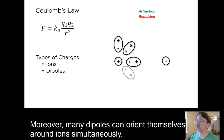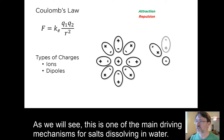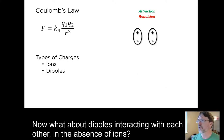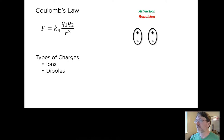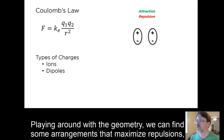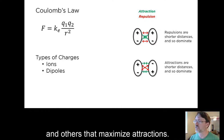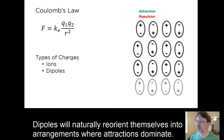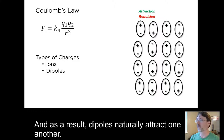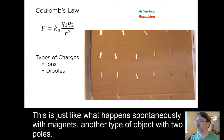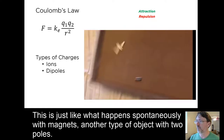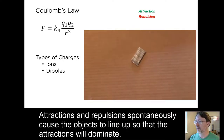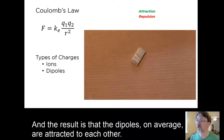Moreover, many dipoles can orient themselves around ions simultaneously. As we will see, this is one of the main driving mechanisms for salts dissolving in water. Now, what about dipoles interacting with each other in the absence of ions? Playing around with the geometry, we can find that some arrangements maximize repulsions and others maximize attractions. Dipoles will naturally reorient themselves into arrangements where attractions dominate, and as a result, dipoles naturally attract one another. This is just like what happens spontaneously with magnets, another type of object with two poles. Attractions and repulsions spontaneously cause the objects to line up so that the attractions will dominate, and the result is that the dipoles, on average, are attracted to each other.